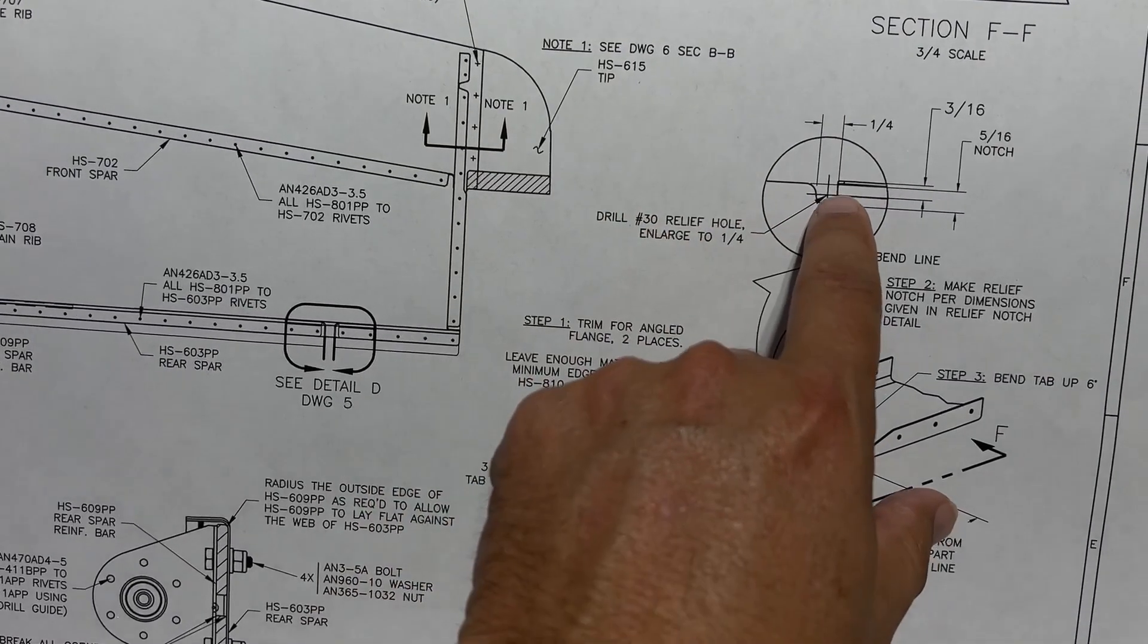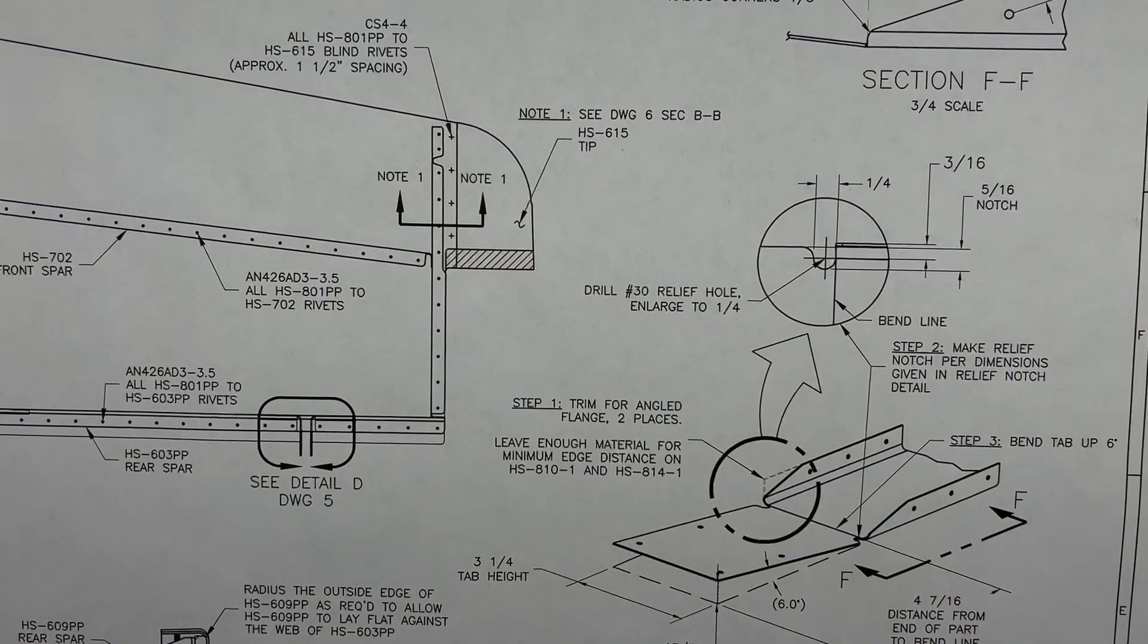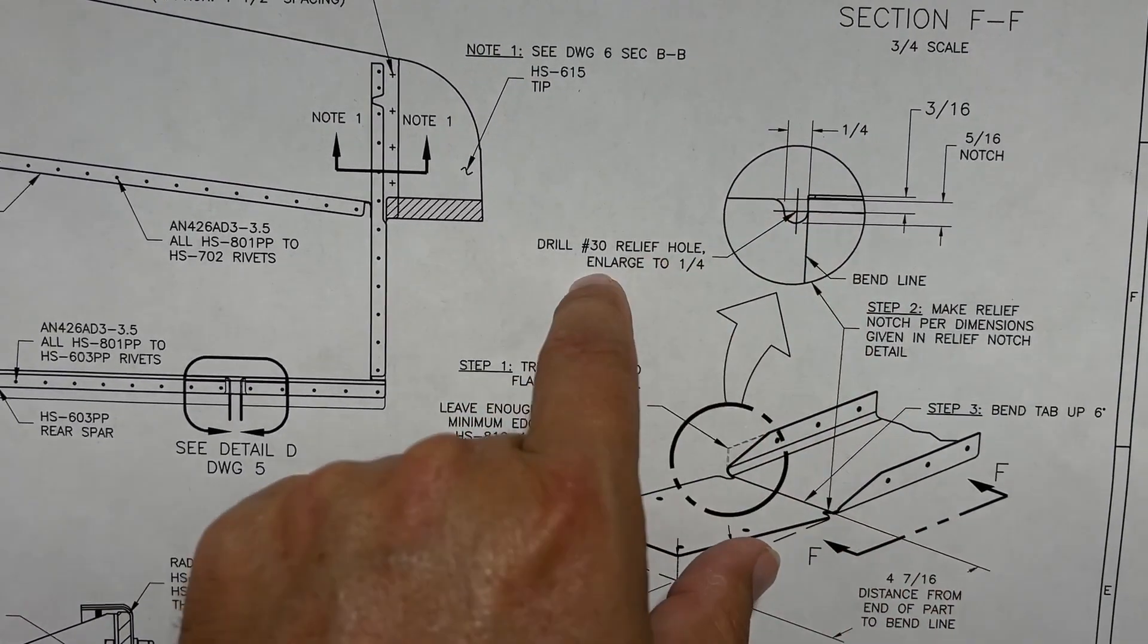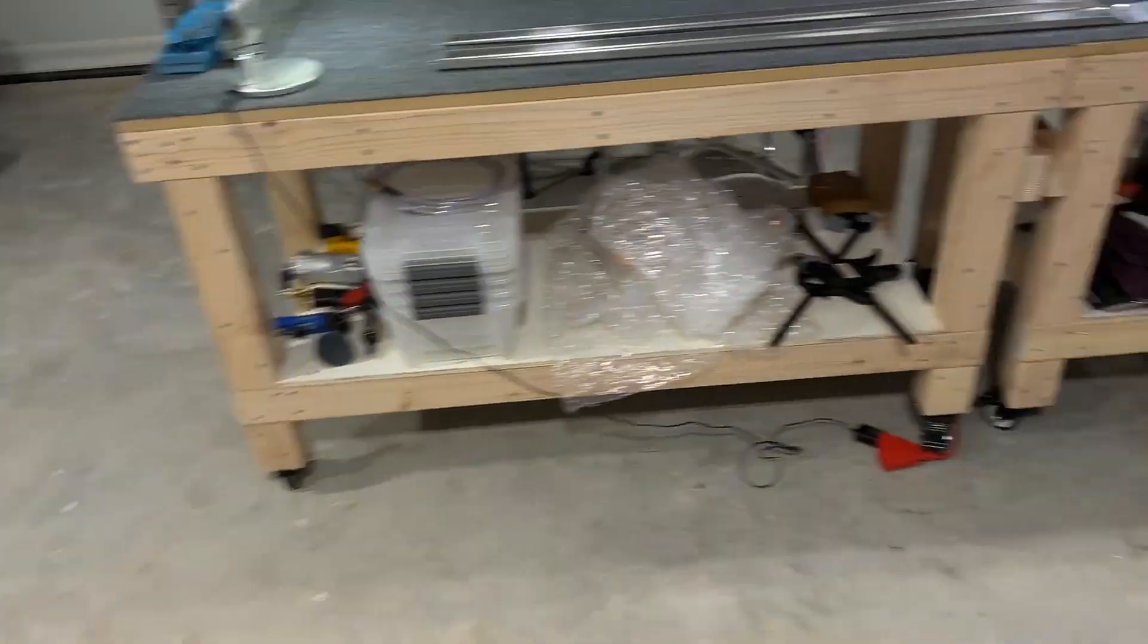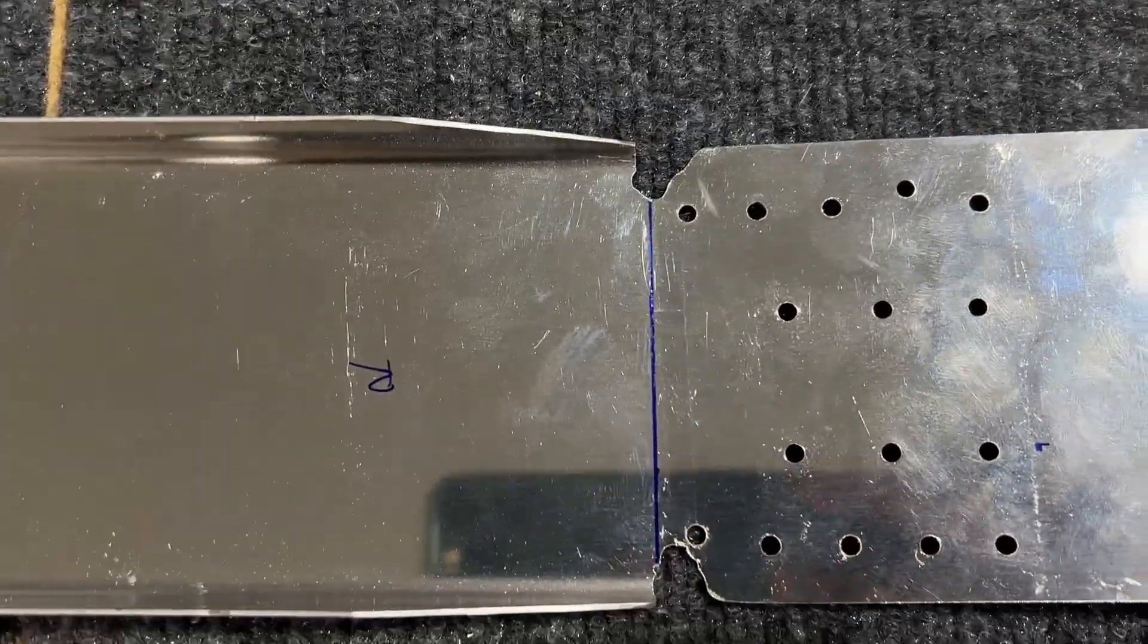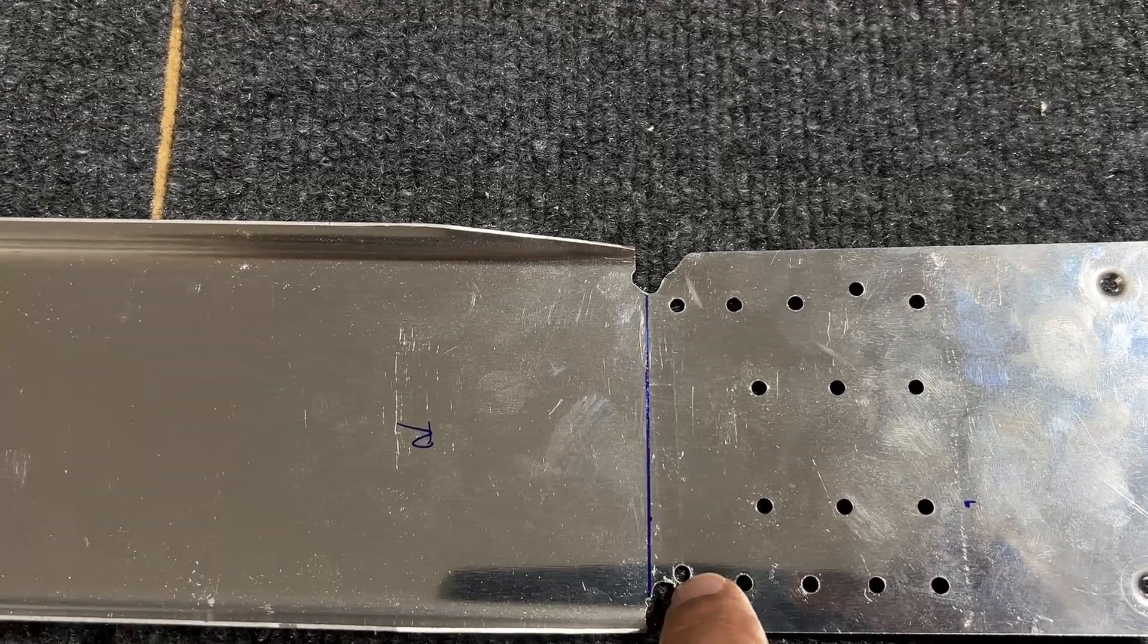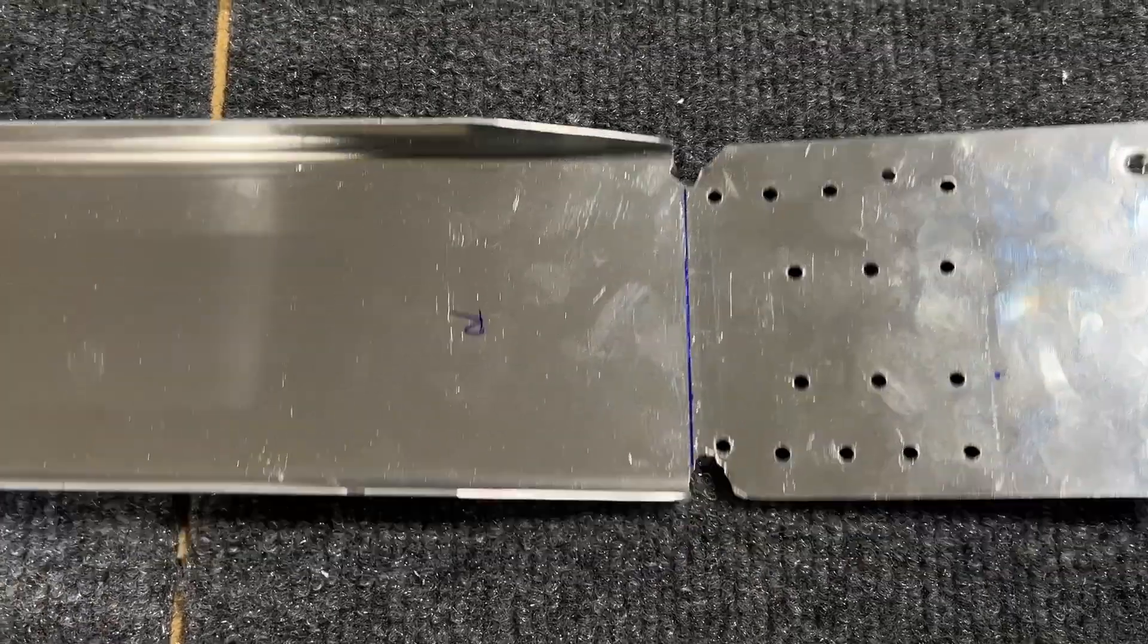It says first drill a number 30, which is almost an eighth inch drill bit. Pilot hole there, and then enlarge it to a quarter, which is a pretty large drill bit. But here's what happened. That ended up looking like this. And yeah, the edge distance, clearly, the minimum edge distance here should be a quarter inch from the edge of this. So that's gone. It's completely incorrect.